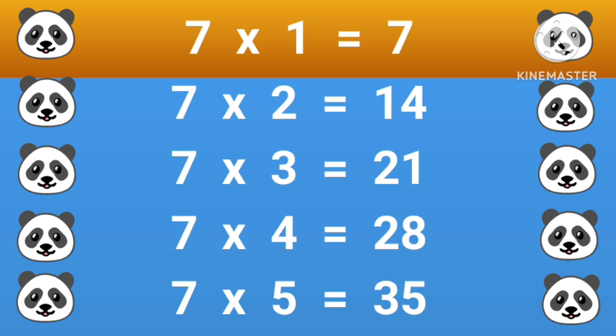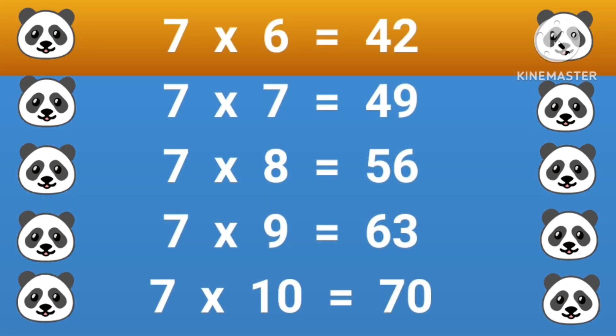7 times 1 equals 7, 7 times 2 equals 14, 7 times 3 equals 21, 7 times 4 equals 28, 7 times 5 equals 35, 7 times 6 equals 42.